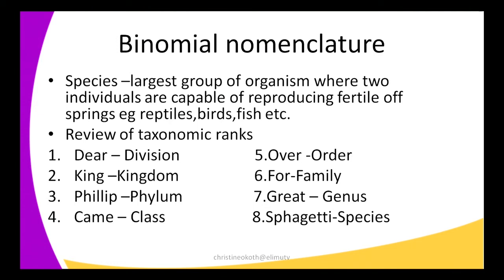So we have defined genus, now we define species. What is a species? This is the largest group of organisms where two individuals are capable of reproducing fertile offspring. For example we have reptiles, birds, and fish. The keywords here are reproducing fertile offspring — this is the group that can intermingle and reproduce fertile offspring.